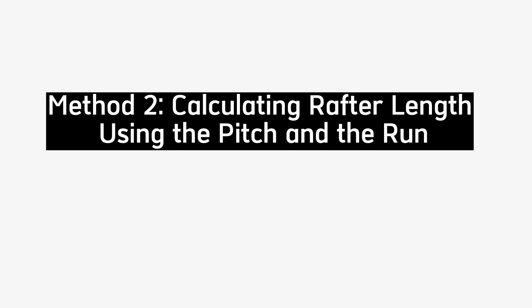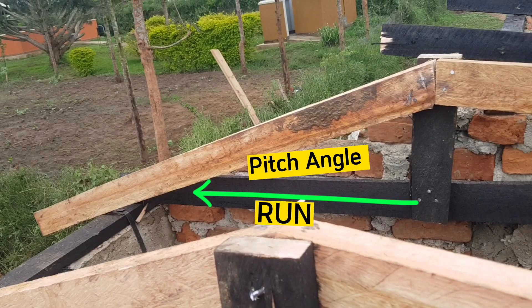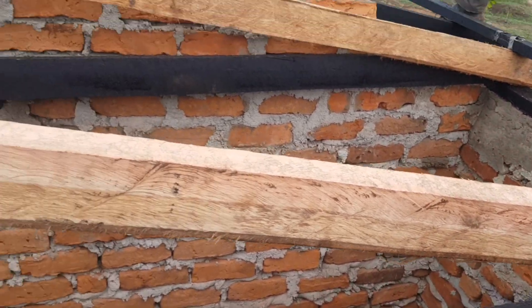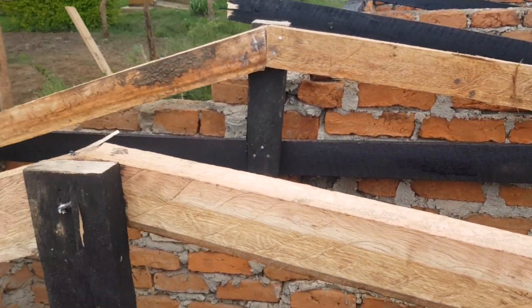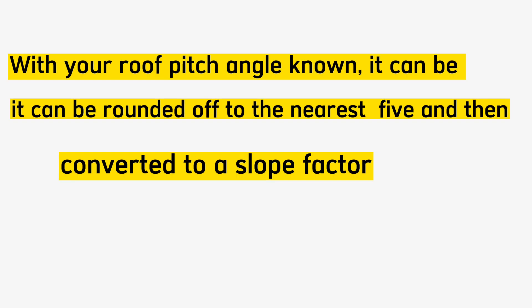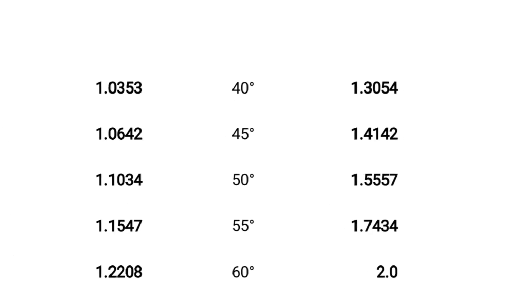Method 2 involves determining roof rafter length using the pitch and the run. In cases where you don't know the rise of your roof, you can use your roof pitch. With your roof pitch determined, it can be rounded off to the nearest five and then converted to a slope factor. For ease, I've listed these factors here on screen.